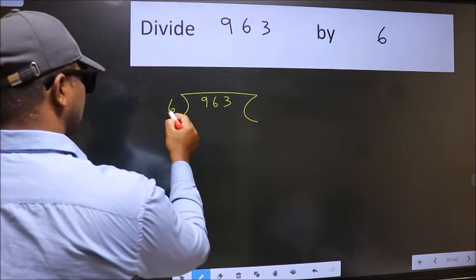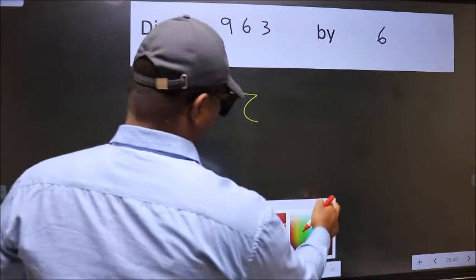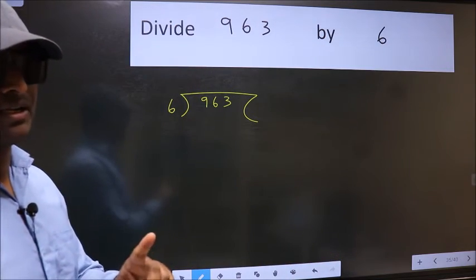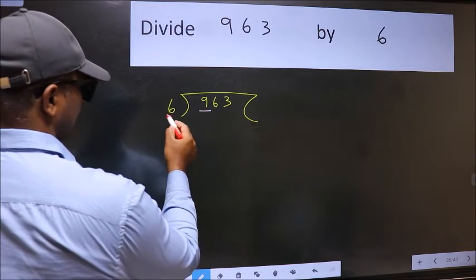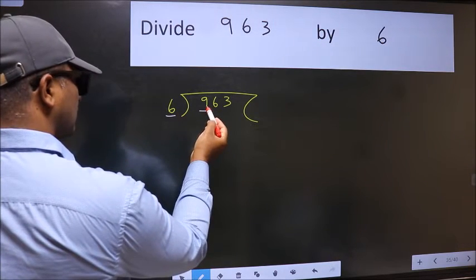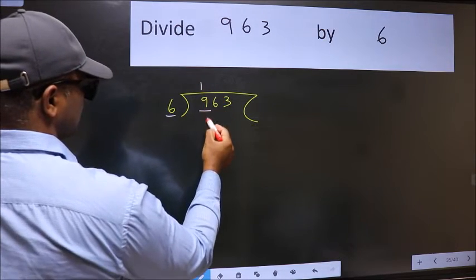6 here. This is your step 1. Next, here we have 9 and here 6. A number close to 9 in the 6 table is 6. 1 times 6.